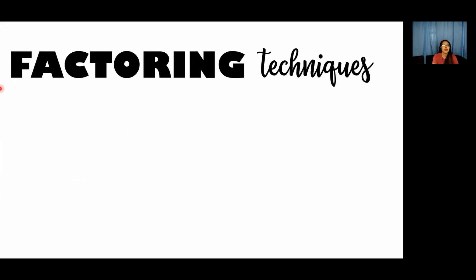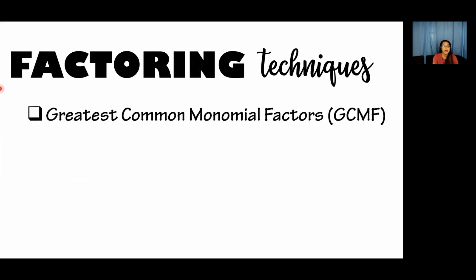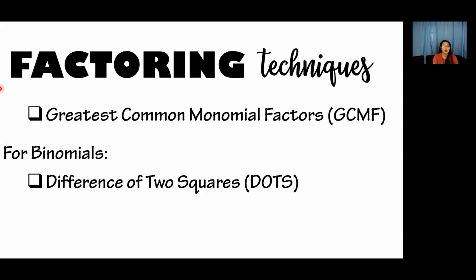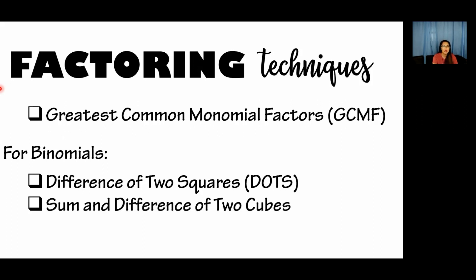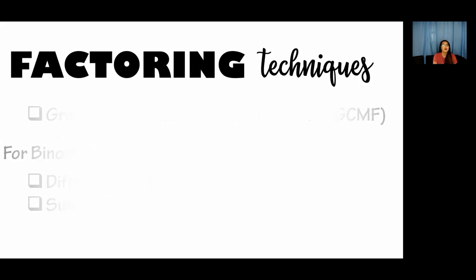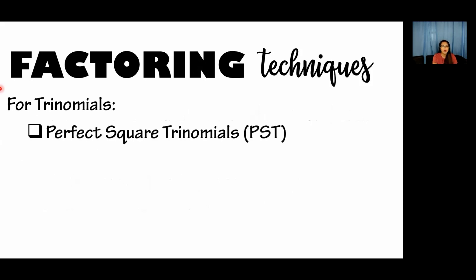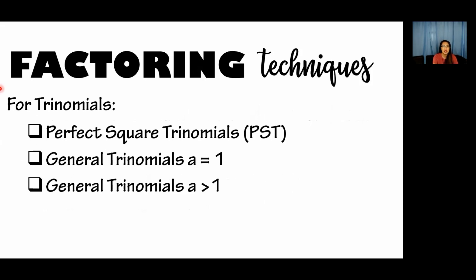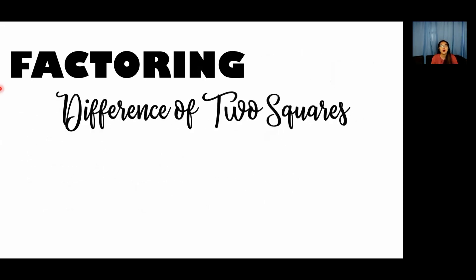In our first video, we already discussed greatest common monomial factors. So we are now moving to factoring techniques for binomials. We will start with difference of two squares. We also have sum and difference of two cubes. For trinomials, we have perfect square trinomials, general trinomials where A equals one, and general trinomials where A is greater than one. For this video, I am going to teach you about factoring difference of two squares.